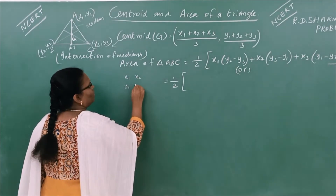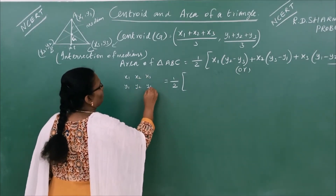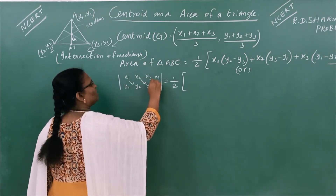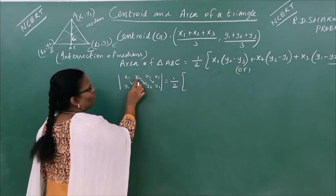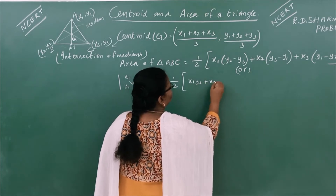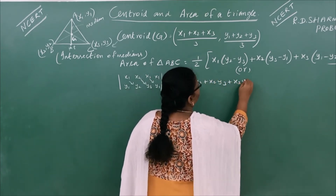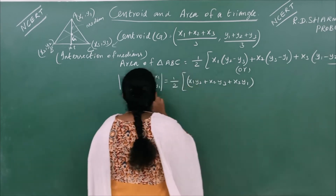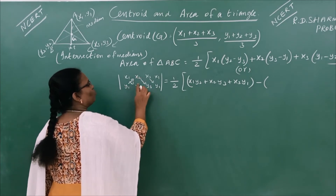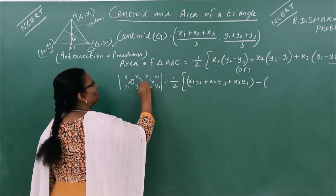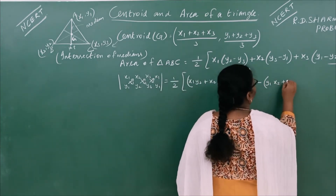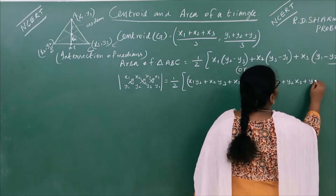x1, y1; x2, y2; x3, y3 — again x1, y1. We know the downward products. Downward products: x1·y2, x2·y3, x3·y1. That's x1·y2 plus x2·y3 plus x3·y1. So downward product minus upward product. Upward product is y1·x2, y2·x3, y3·x1 — that is y1·x2 plus y2·x3 plus y3·x1.